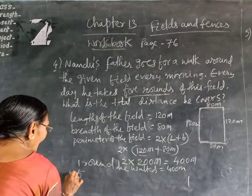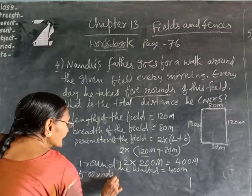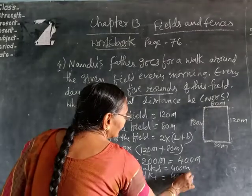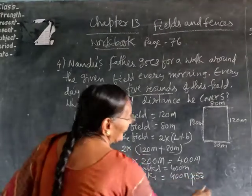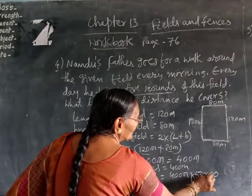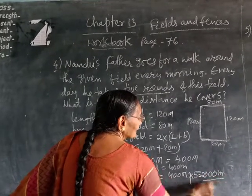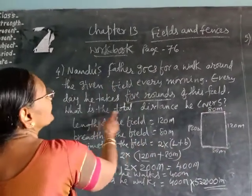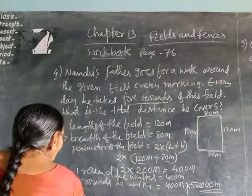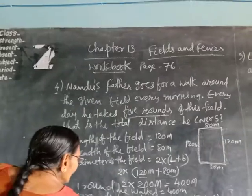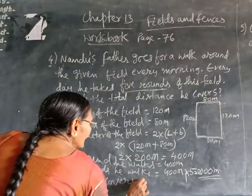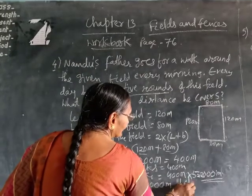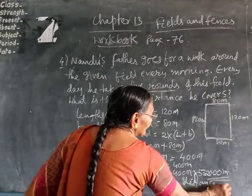So in 5 rounds, he walks: 400 meters into 5. Then how much will come? That is 2000 meters. This much he is walking every morning in this field. Therefore, he covers 2000 meters every day.